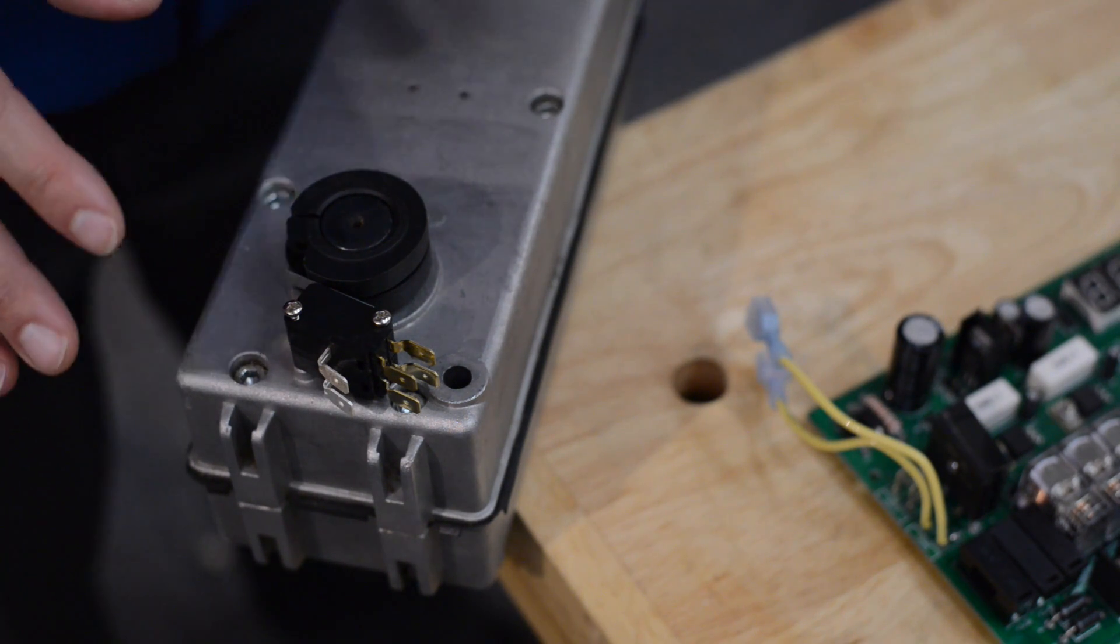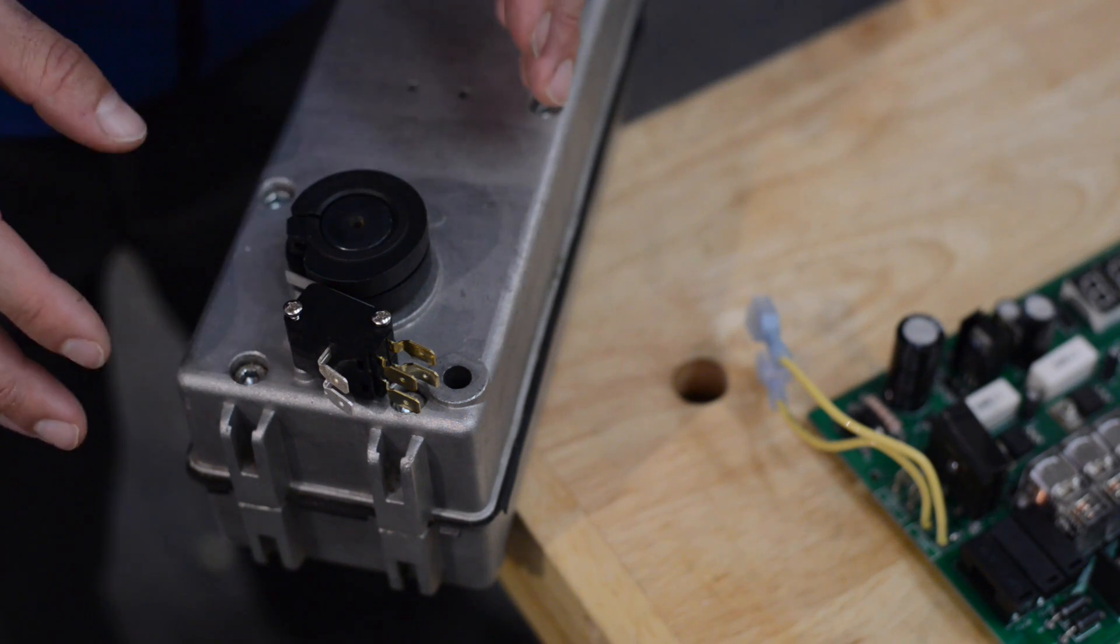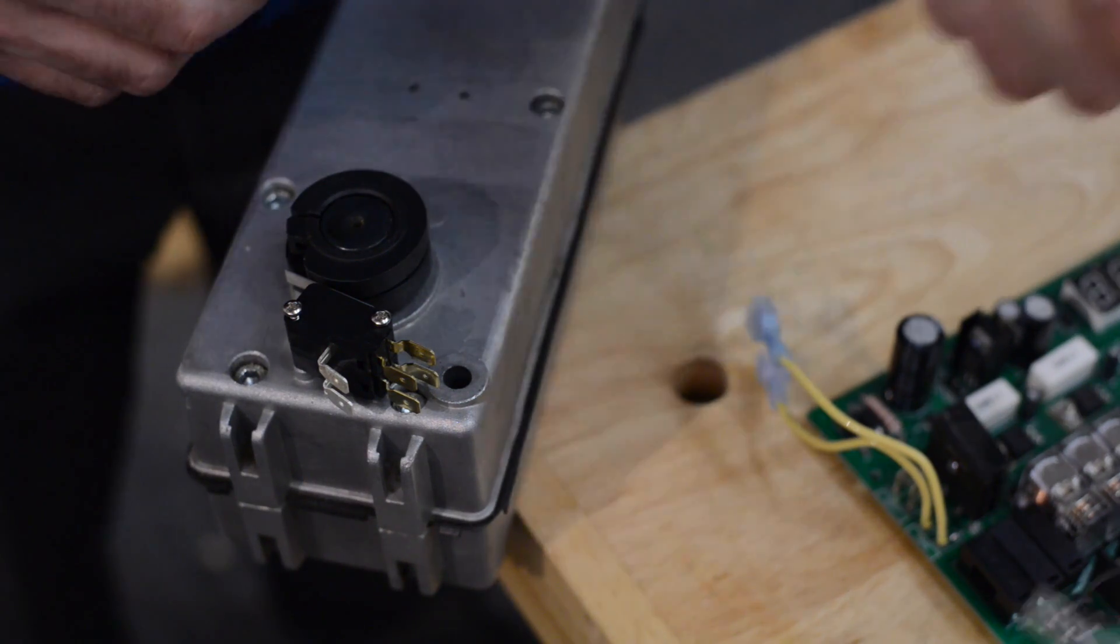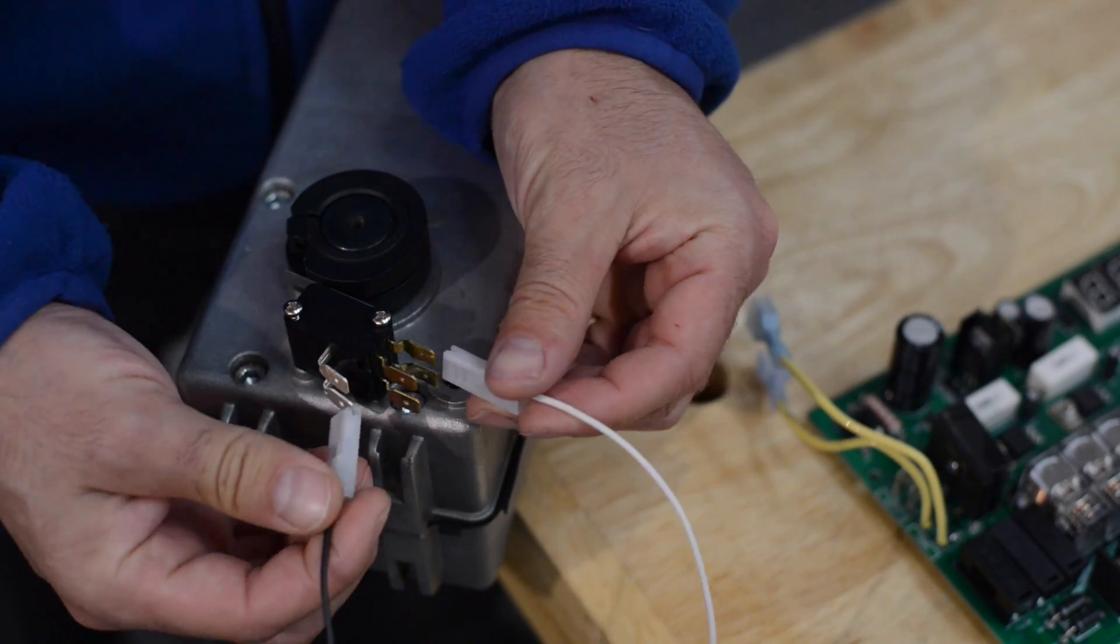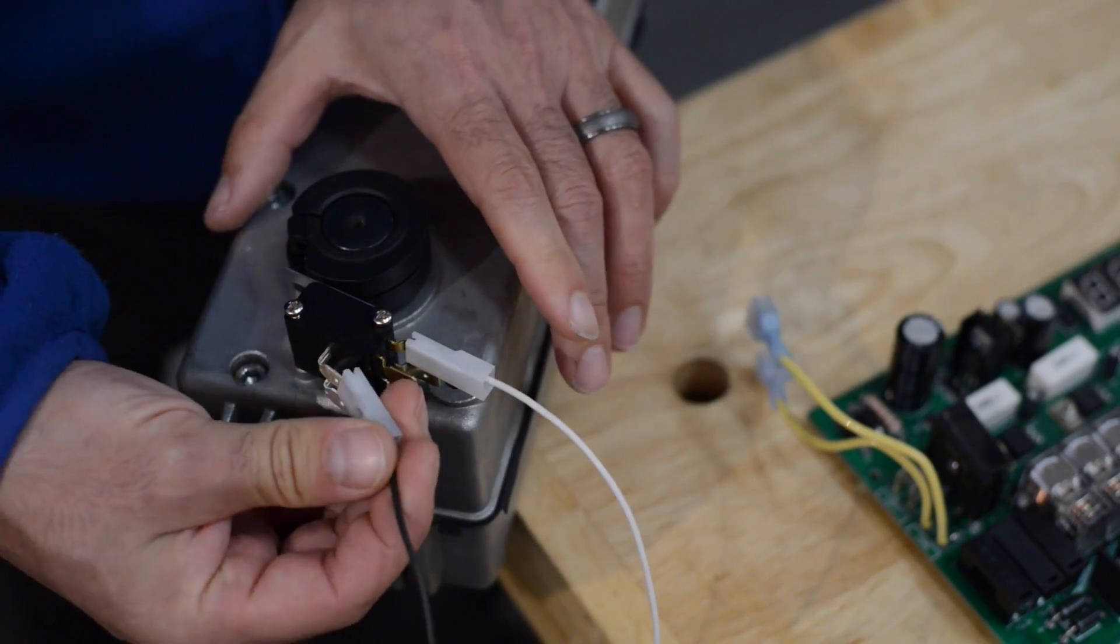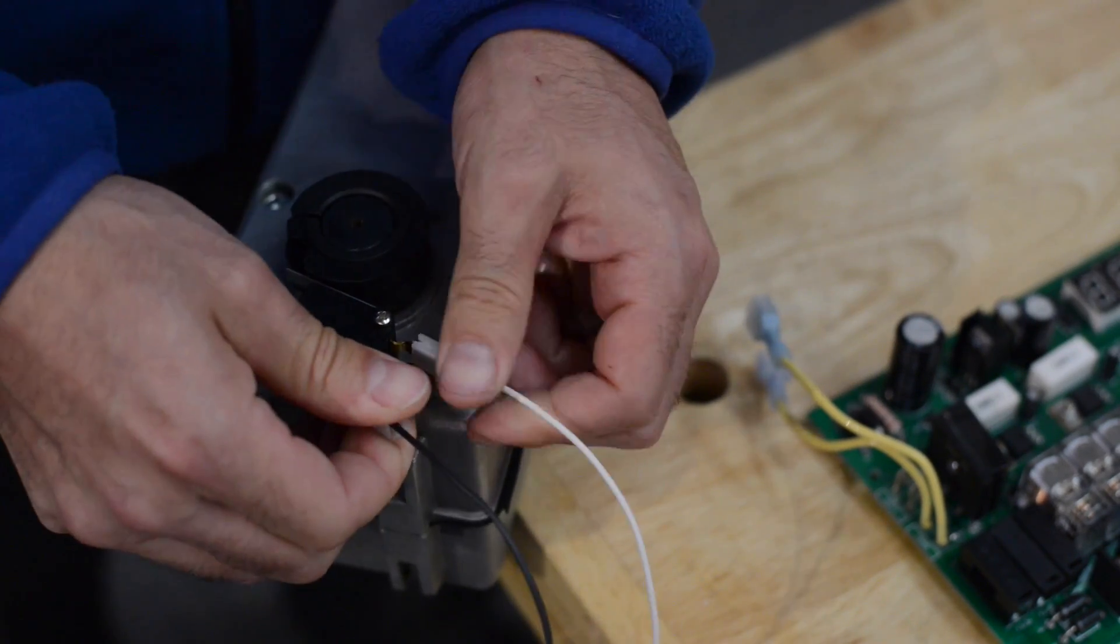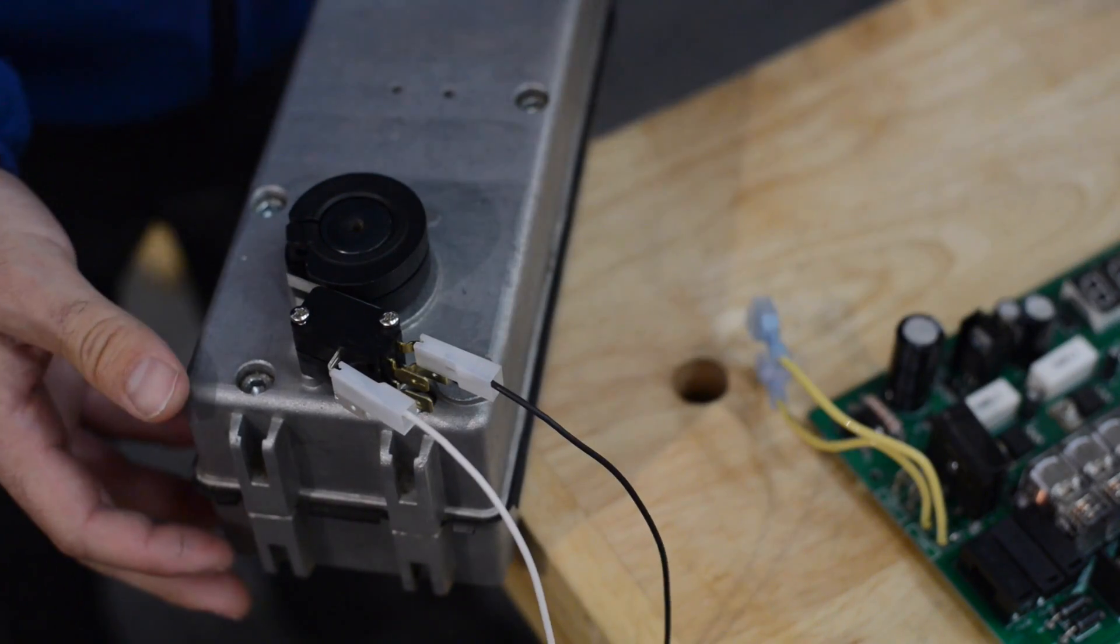Now that we have that solved now we can go on to identifying your common and your normally closed terminal on your limit switch. We get questions about which wire color because it comes with a black and a white. Well as you can see wire colors are not a reliable way to tell anything. I can put a black one here and a white one there. I can swap them, it doesn't really matter, it didn't change which one is my common and which one is my normally closed.